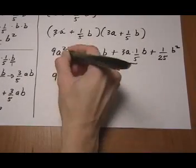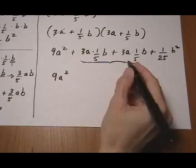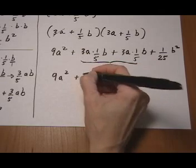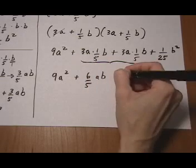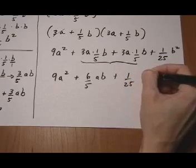So let's bring down the 9a squared. Then the 3a times 1 fifth b happening twice turns into 6 fifths ab. And then bring down the 1 25th b squared.